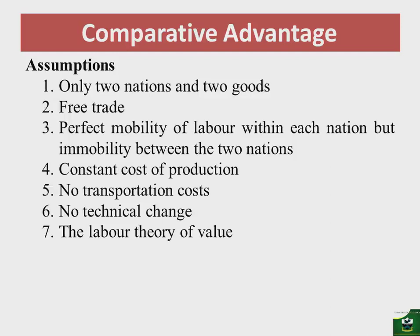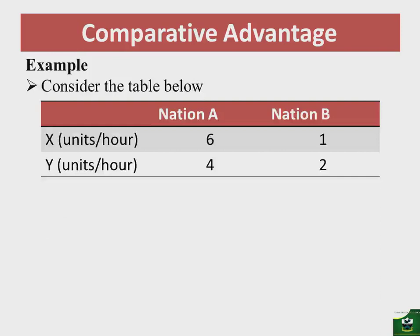Consider a table where nation A produces six units of X in an hour and four units of Y in an hour, while nation B produces one unit of X in an hour and two units of Y in an hour. The question: which nation has an absolute advantage in the production of commodity X?